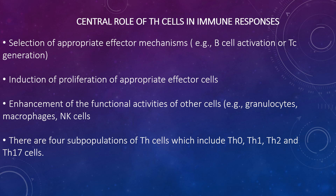Helper Th0 cells can become a Th1, a Th2, or a Th17 cell, which depends upon the cytokines in the environment, which is influenced by the antigen. For example, some antigens stimulate IL-4 production, which favours the generation of Th2 cells, while other antigens stimulate IL-12 production, which favours the generation of Th1 cells.